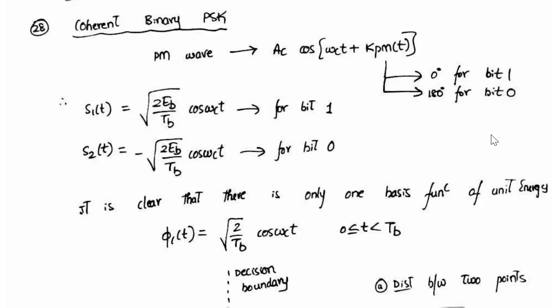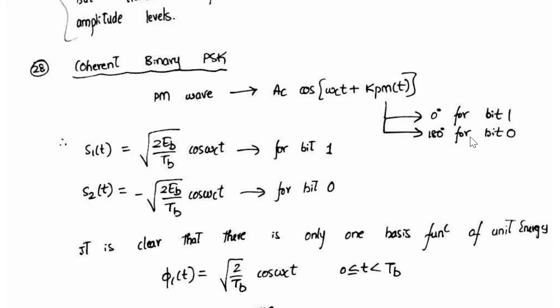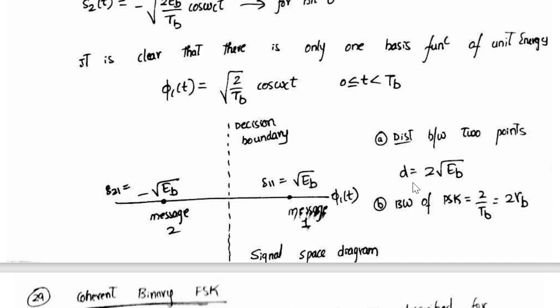Here comes coherent BPSK. All the signal representations for bit 1 and bit 0 are captured, and the decision boundaries are captured, and the relation between the various relations like distance between two points, the bandwidth of BPSK system, and the signal representation based on one basis function - all captured.